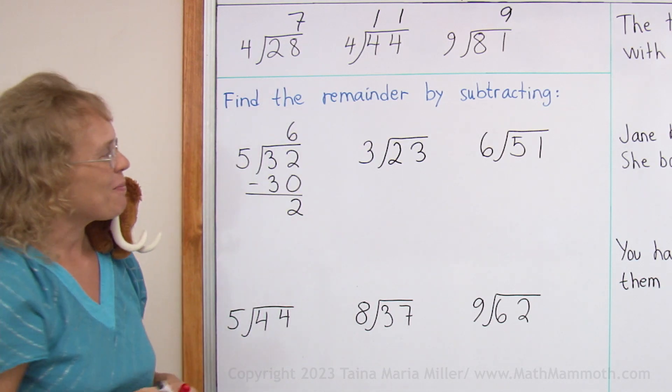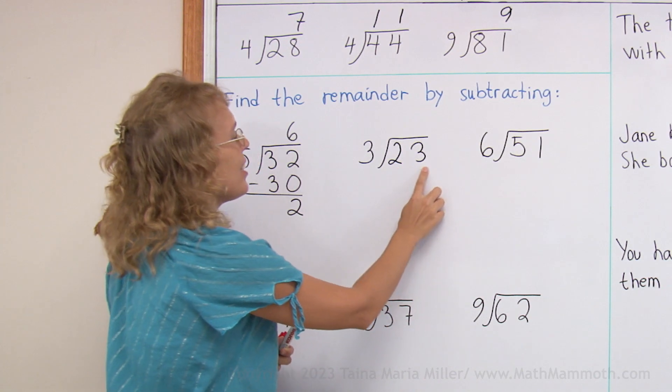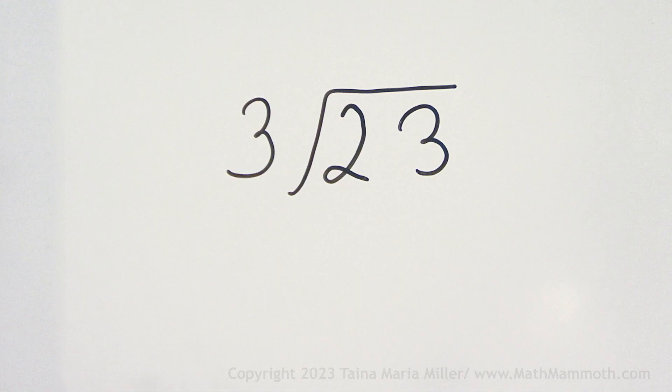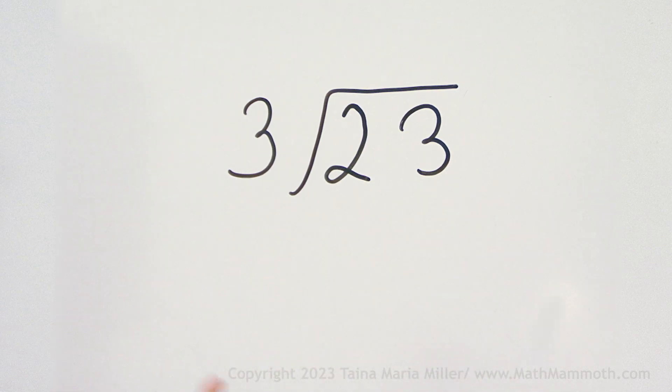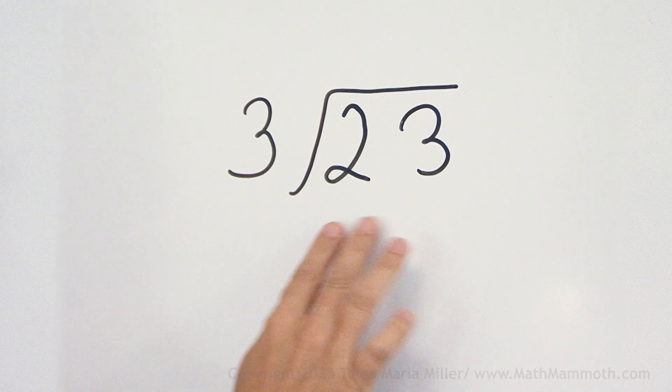Let's try that again. 23 divided by 3. How many 3's are there in 23? Or how many times does 3 go into 23? You remember 7 times 3 equals 21. 8 times 3 is 24, that's too much. So 7 times.